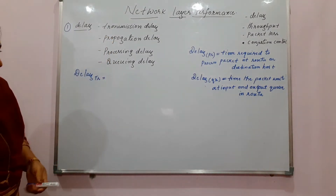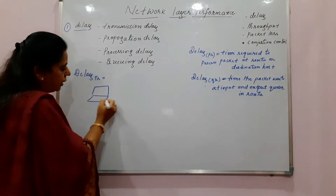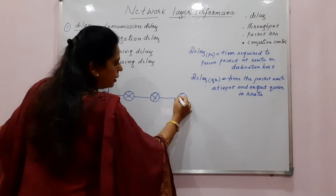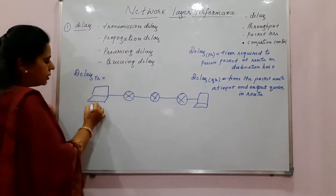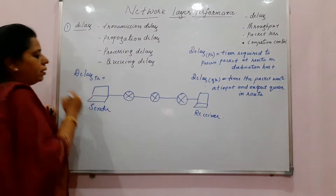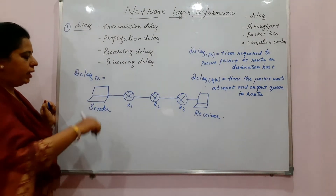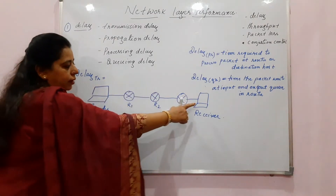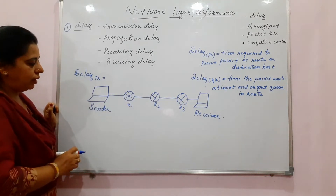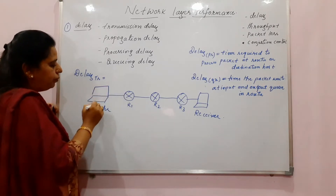The very first one is transmission delay. To explain this, let me take a simple network scenario with a sender connected to a receiver via different routers — router R1, R2, R3. Transmission delay is the time taken for the packet to travel from the sender until it reaches the receiver. The first thing is that the sender is going to transmit the packet.